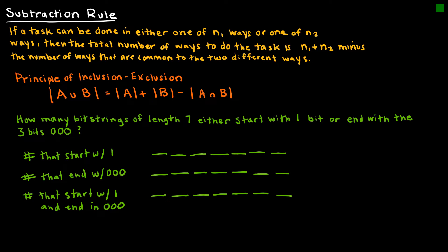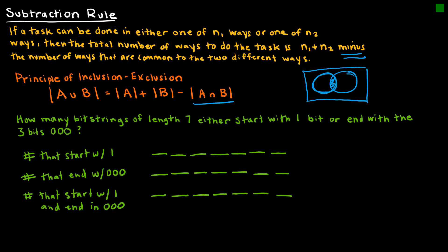Now we have the subtraction rule, which you'll often see called the principle of inclusion-exclusion. The subtraction rule says if a task can be done in either N1 ways or N2 ways, then the total number of ways is N1 plus N2 minus the number of ways common to both. If there's an overlap where values are not disjoint, we have to subtract what's in the overlap because it was counted in both the first set and the second set.